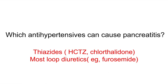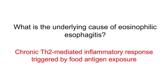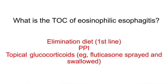What is the underlying cause of eosinophilic esophagitis? Chronic Th2-mediated inflammatory response triggered by food antigen exposure. What is the treatment of choice for eosinophilic esophagitis? First-line treatment is an elimination diet of the triggers, PPI, and topical glucocorticoids — for example, fluticasone sprayed and swallowed.